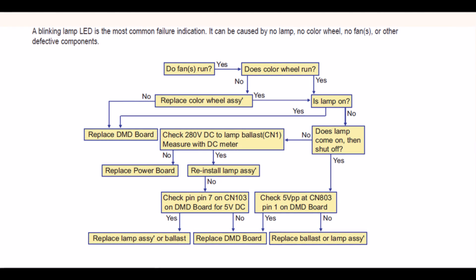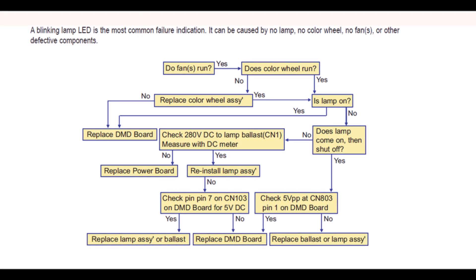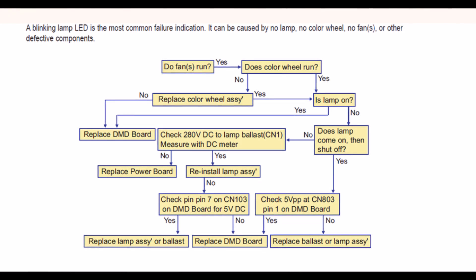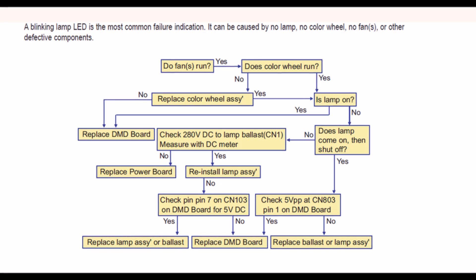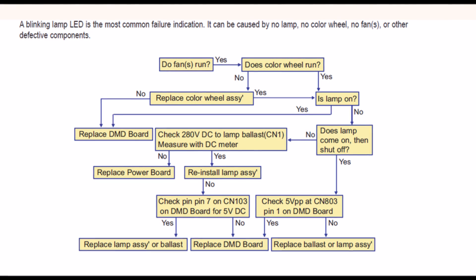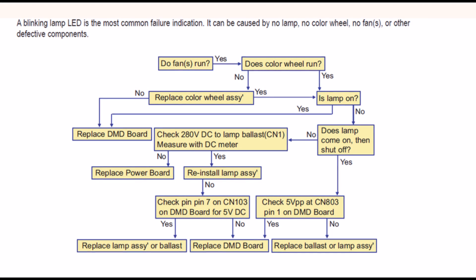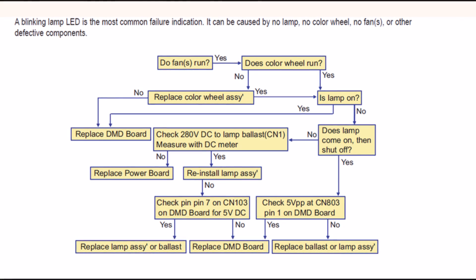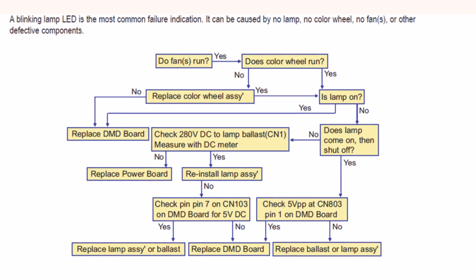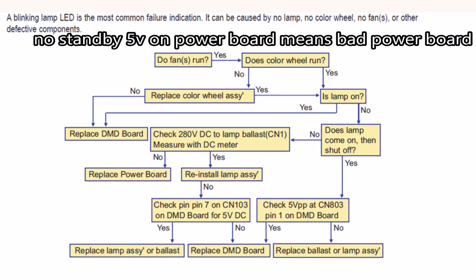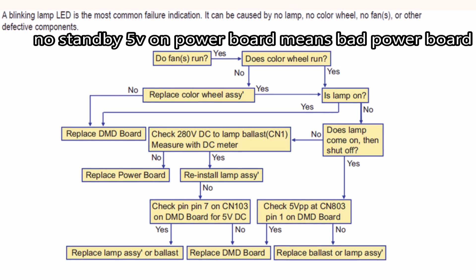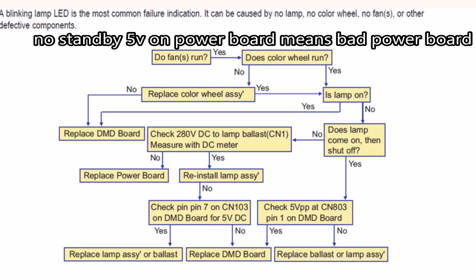Now, I went ahead and added this flow chart from a service manual. It basically narrows it down to if you have to replace the lamp or the ballast that powers the lamp, or replace the DMD board which controls the picture, or replace the color wheel. It's a yes and no chart, but you have to have a voltmeter to go through some of these steps. Does your fan run? Does your color wheel run? Is your lamp on? Check your 5 volts at connection 803 pin 1 on DMD board. If you have the 5 volts, replace the DMD board. If not, replace the ballast or the lamp.